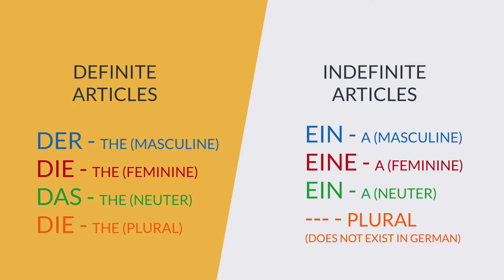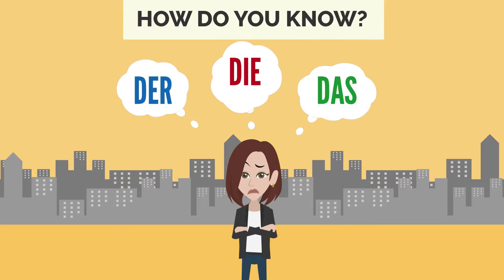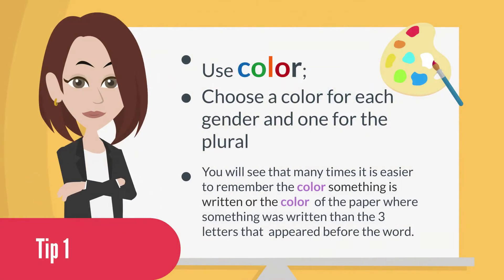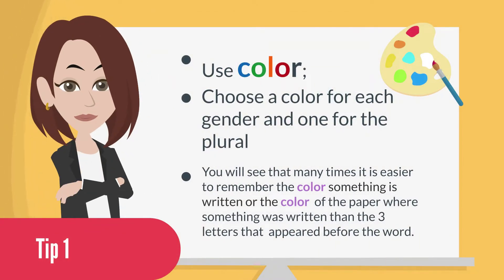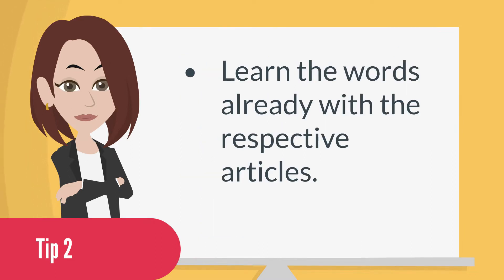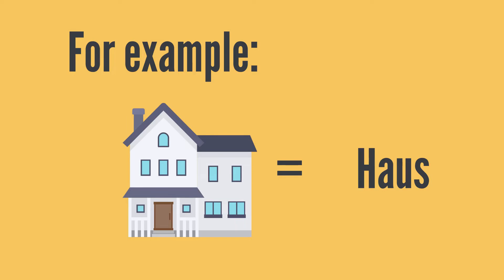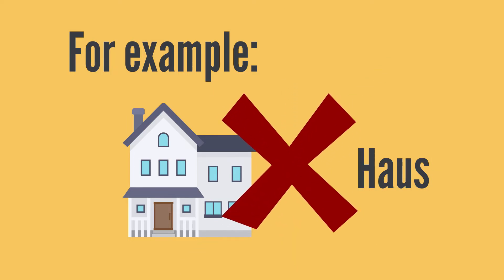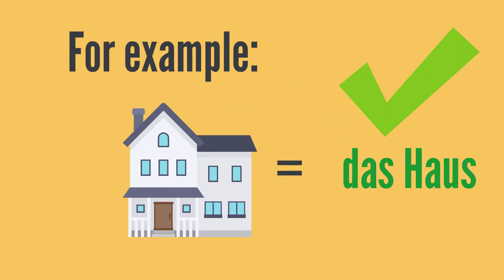So how do you know if it's der, die, or das? We have a few tips. If you're starting out, just use colors, because you'll see that your brain remembers colors way easier than those three letters. Choose a color for each gender and one for the plural — one that makes sense for you — and use it. When you are learning new words, you should already learn the word with its respective article. For example, if you're learning 'house' in German, don't just learn 'Haus' — learn 'das Haus', like 'das' belongs to it. You'll see it will make your life way easier.